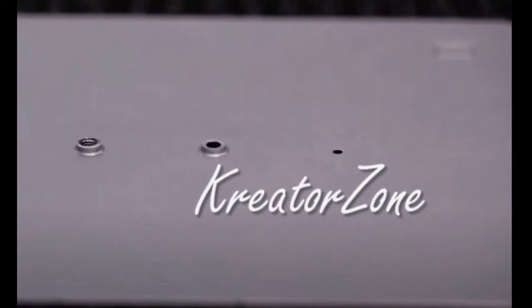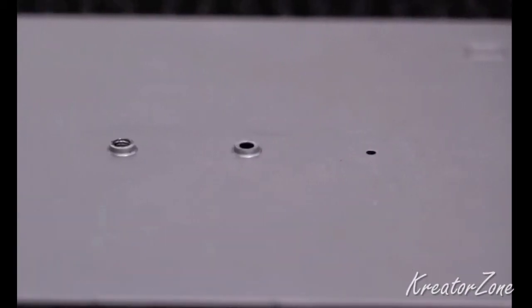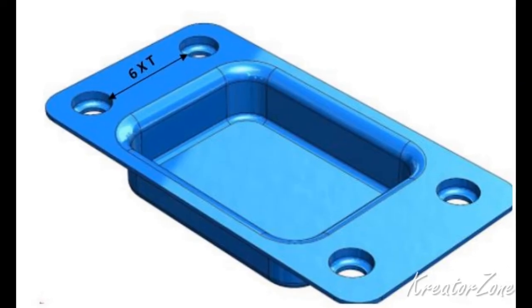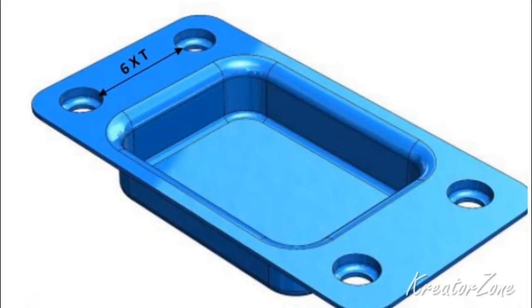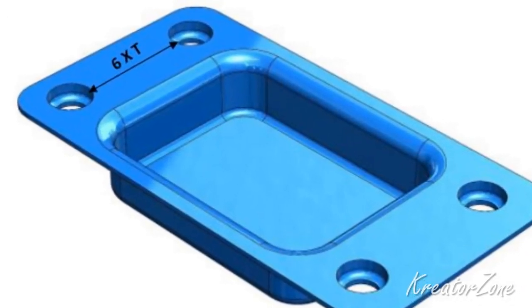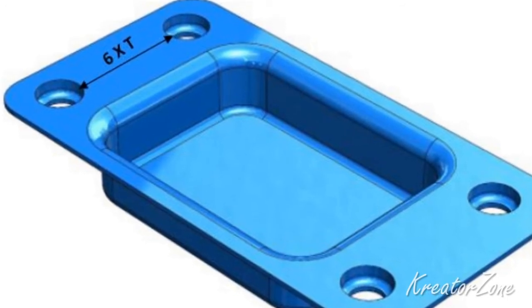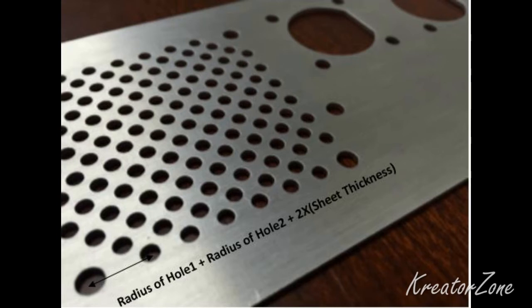It is important to maintain distance between two extruded holes in sheet metal designs. If extruded holes are too close, it can lead to metal deformation. It is recommended that the minimum distance between two extruded holes should be six times the thickness of the sheet metal. Minimum center-to-center hole distance is maintained to avoid metal distortion, deformation, and fracturing. The minimum distance between two hole centers should be equal to the sum of the hole radius plus two times the sheet thickness.